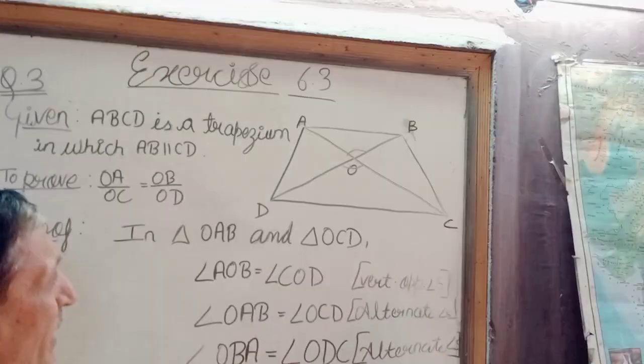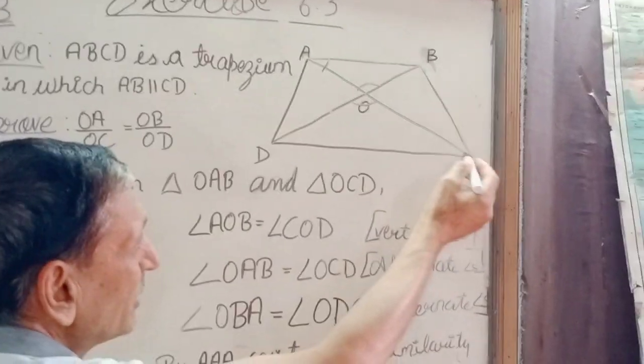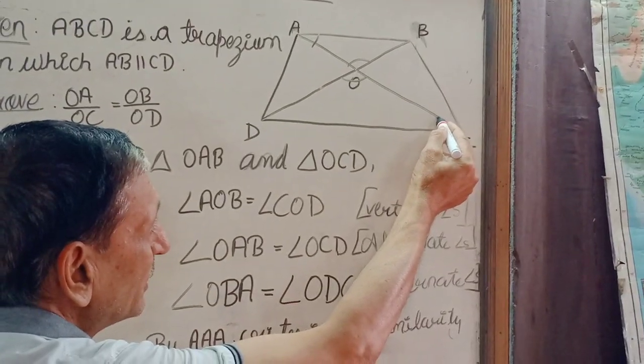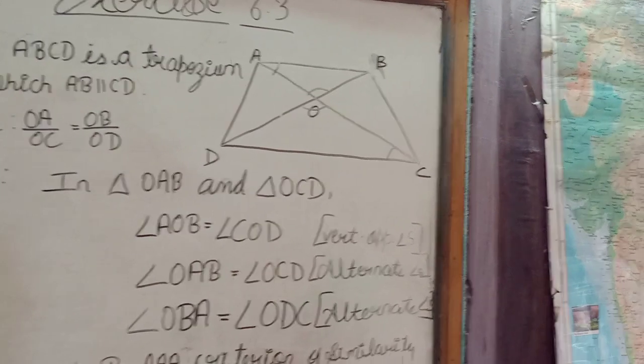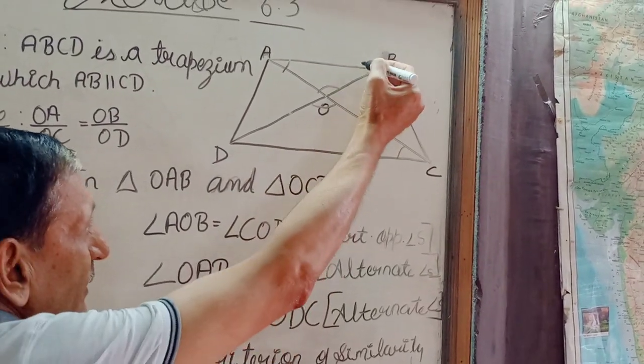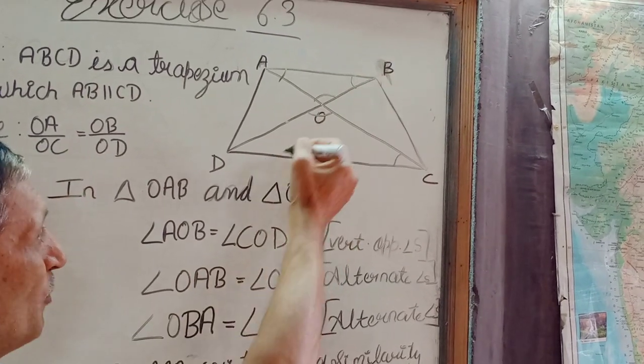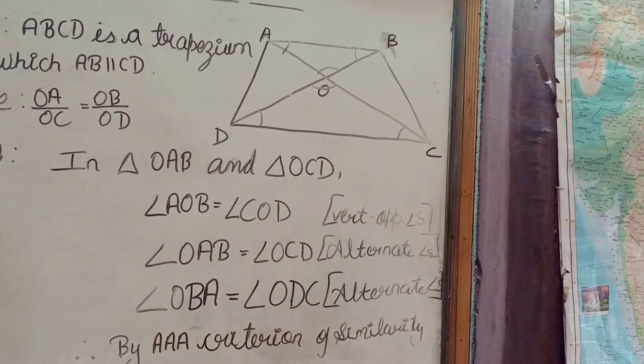We have angle OAB is equal to angle OCD as alternate interior angles, and also angle OBA is equal to angle ODC.